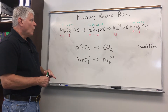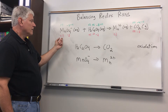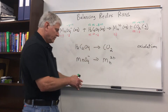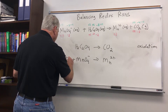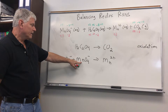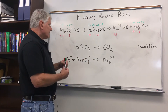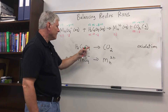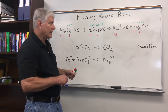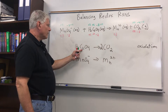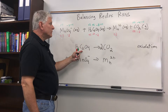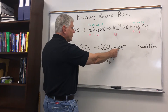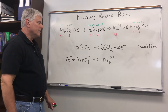Now I'm going to assign electrons. Each manganese has gained 5 electrons, going from plus 7 to plus 2, so I'll write 5 electrons on the reduction half reaction. Each carbon has lost 1 electron, but I need to balance the carbons first. I have 2 carbons on the left and 2 on the right, so each carbon loses an electron — that's 2 electrons total for the oxidation half reaction.